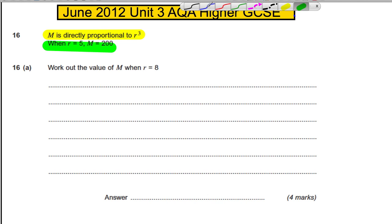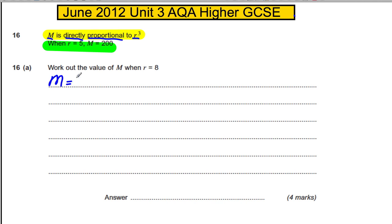There's a formulaic way to do this. If M is directly proportional to R cubed, we can write that M is equal to K — some constant we're going to find — multiplied by R cubed.